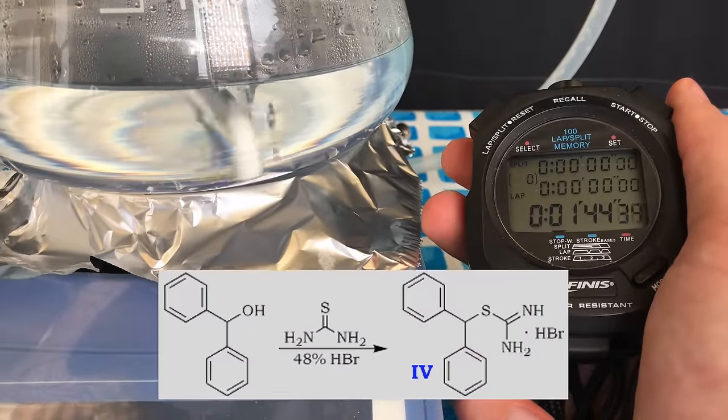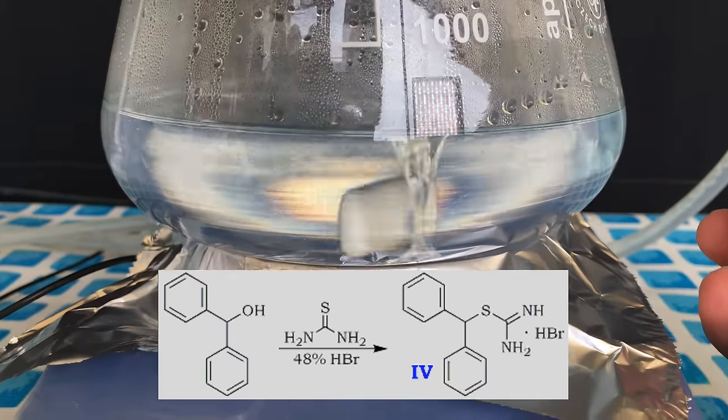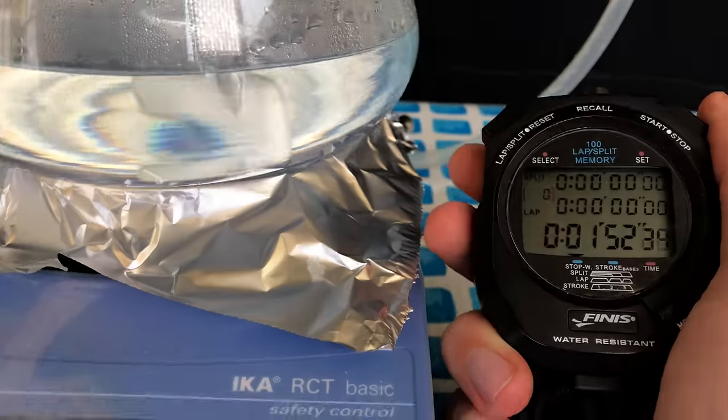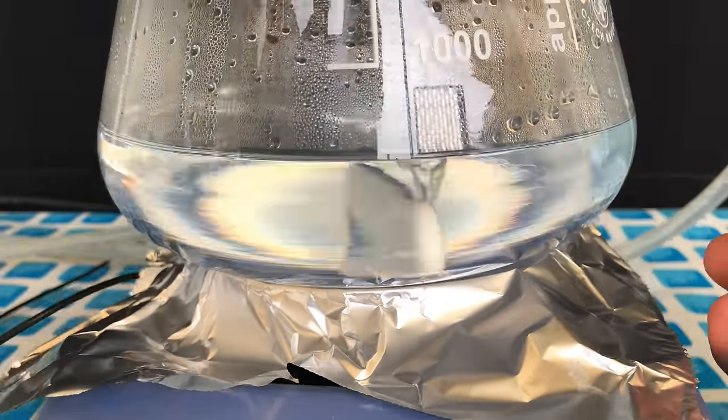In this first reaction step, we get the isothyronium salt of bensitrol, which can be seen here. By the way, I stole this procedure and reaction from Arrowit, and if you want to read the entire paper, you can find a link down in the video description.